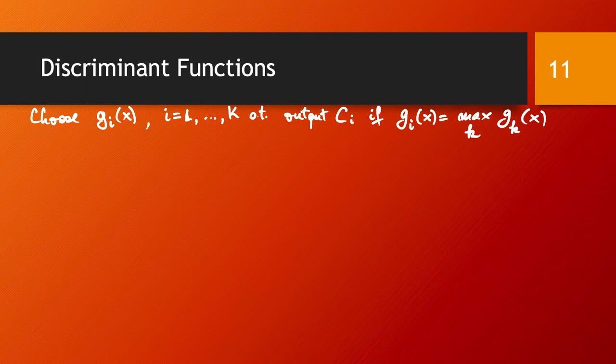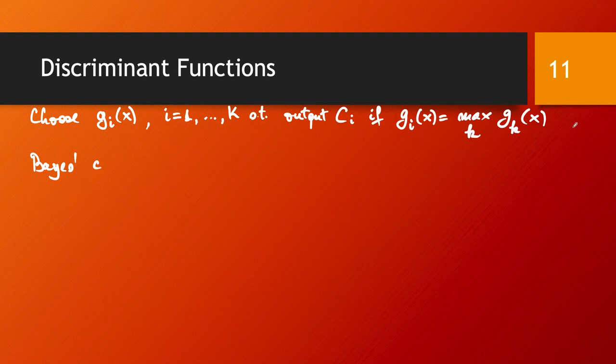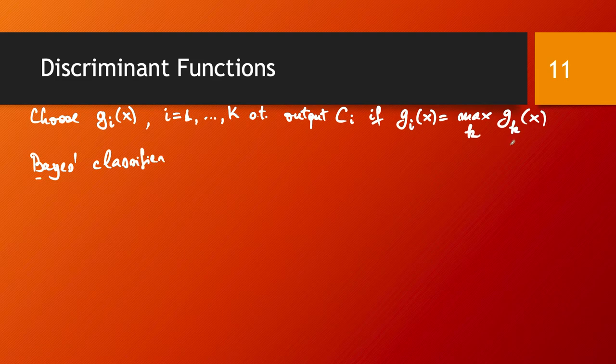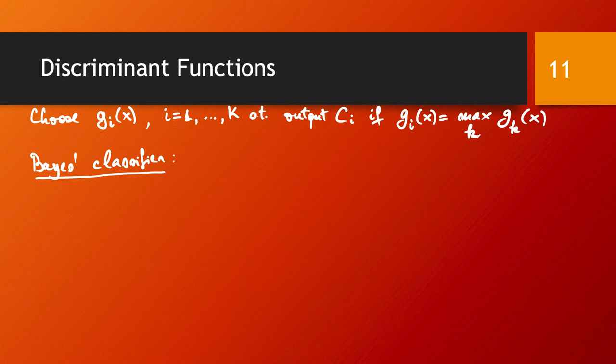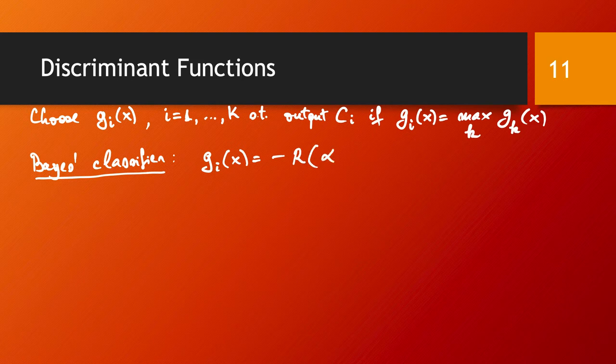As a matter of fact, what we discussed before about the Bayes classifier can easily be turned into the case of discriminant functions. For the Bayes classifier, you can simply choose these discriminant functions to be g_i of x equal to minus the risk of taking decision alpha_i. In other words, the risk of outputting class i for input x.